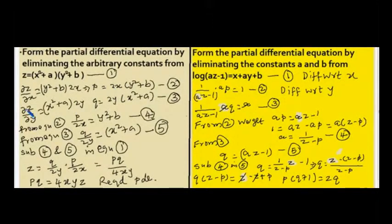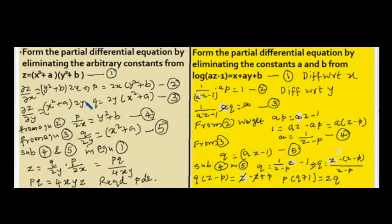Now let us differentiate the given equation with respect to y. It is dou z by dou y. Here x squared plus a is a constant, so it is written as it is. The differentiation of y squared is 2y, and the differentiation of b is 0. So q, because dou z by dou y is q, equals 2y into (x squared plus a). This is equation number three.